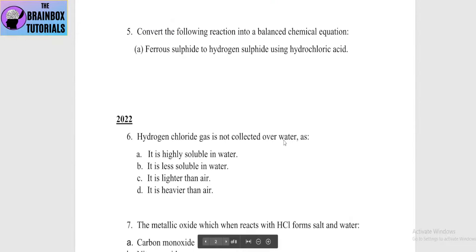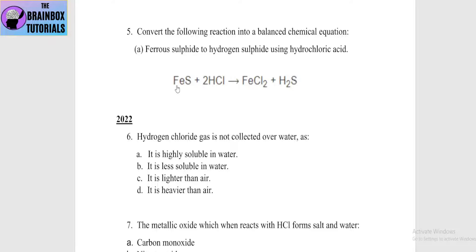Next question: convert the following into a balanced chemical equation — ferrous sulfide reacts with hydrochloric acid to produce hydrogen sulfide. The reaction is: FeS + 2HCl → FeCl2 + H2S gas.